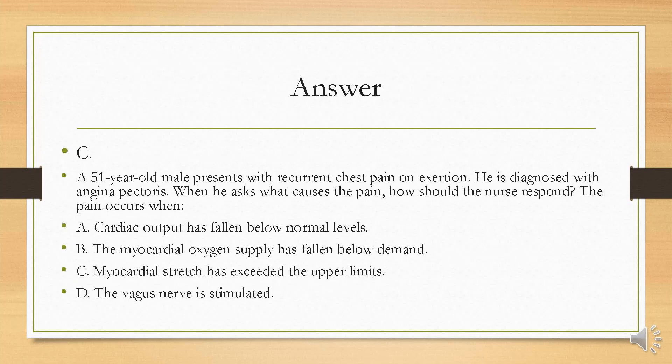The answer is B. Angina is chest pain caused by myocardial ischemia, which develops if the flow or oxygen content of coronary blood is insufficient to meet the metabolic demands of myocardial cells. A decrease in cardiac output would lead to general systemic symptoms, not just chest pain. Myocardial stretch does not affect angina symptoms, and vagus nerve stimulation causes a change in heart rate — it does not necessarily precipitate chest pain.